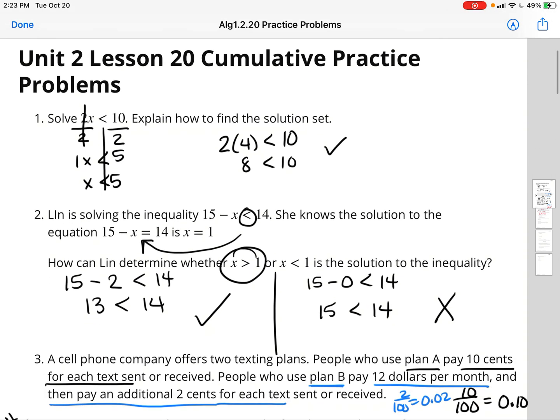In the first problem, it says solve 2x is less than 10 and explain how to find the solution set. I have a number that is multiplied by a variable, so I want to do the opposite because my whole purpose is always to get that variable by itself. So I did the opposite which is divide by 2 on both sides of the inequality. 2x divided by 2, you can write it as 1x or just leave the variable by itself. And then on the right side, 10 divided by 2 is 5. So I have x is less than 5.